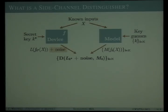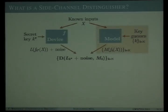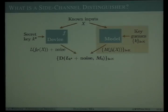The remaining power consumption is independent of the data and behaves as random noise distorting the signal. Since the inputs relating to the measurements are known, the attacker can first compute the outputs of the target function as they would be under each key hypothesis. He then uses some model, such as the Hamming weight, which he hopes is a good approximation for the true data-dependent power consumption.